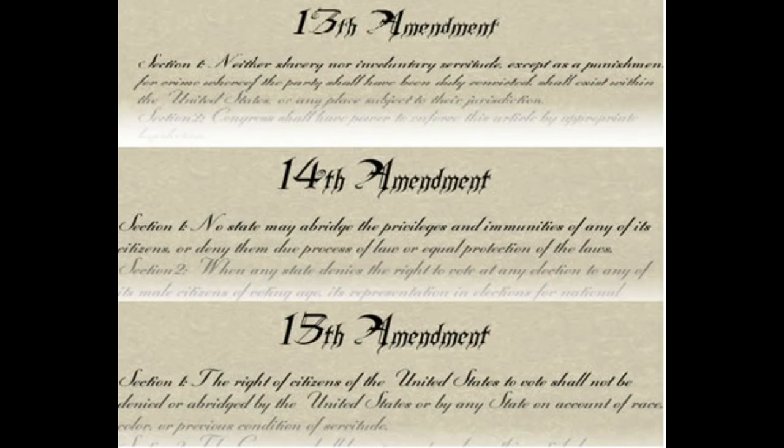On July 9th, 1868, the 14th Amendment was ratified, giving citizenship to African Americans that were born into slavery. And on February 3rd, 1870, the 15th Amendment was ratified, giving African American men the right to vote.